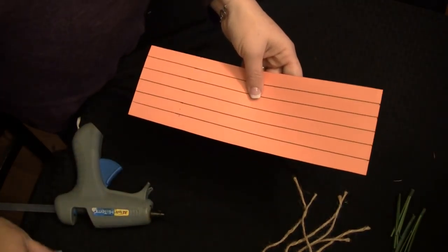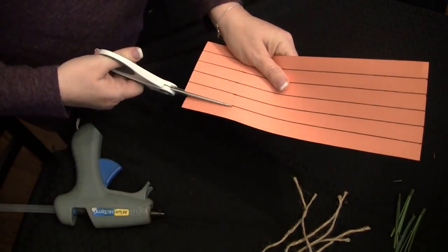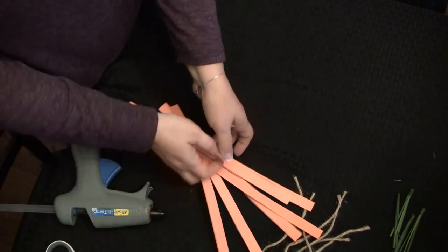orange construction paper and you're just going to draw some straight lines. You need about four or five, it just depends on how long you want them to be and these are actually going to be our carrots.